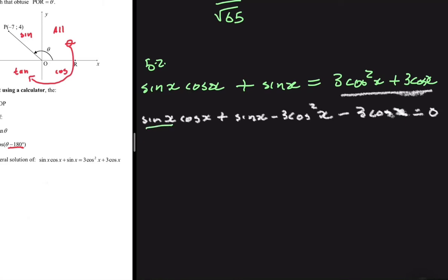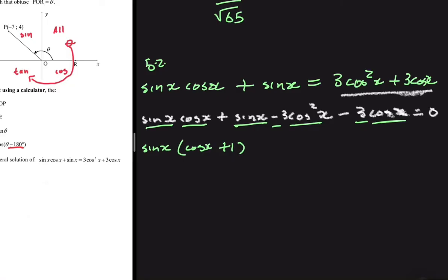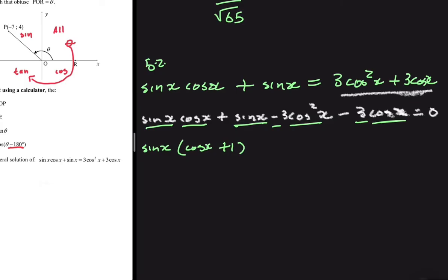I want you to realize something. We have sin(x) here and sin(x) here, so let's take sin(x) as a common factor for those two terms. If we do that, we get sin(x) times (cos(x) + 1). And then for the last two terms, we have cos²(x) and cos(x), and we have the factor of three in both, so why not take minus 3cos(x) as a common factor?